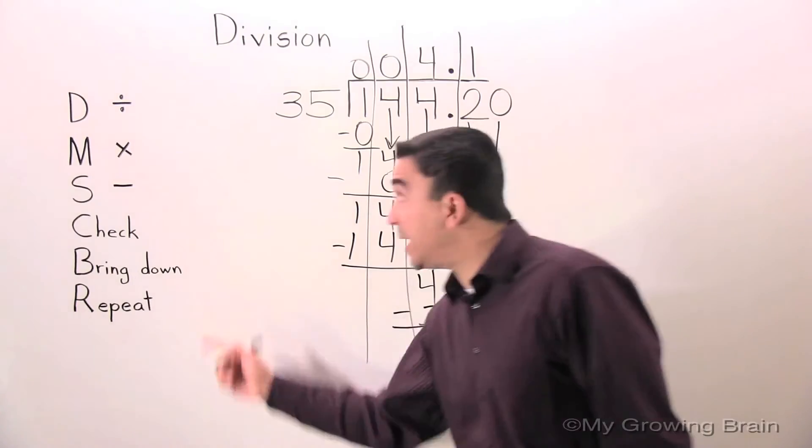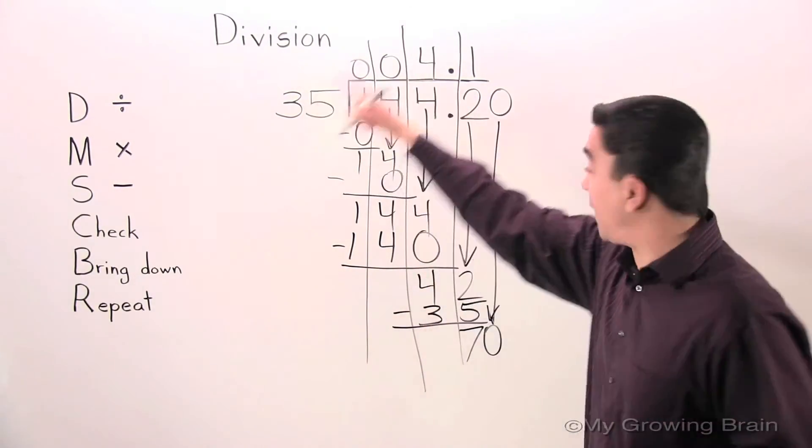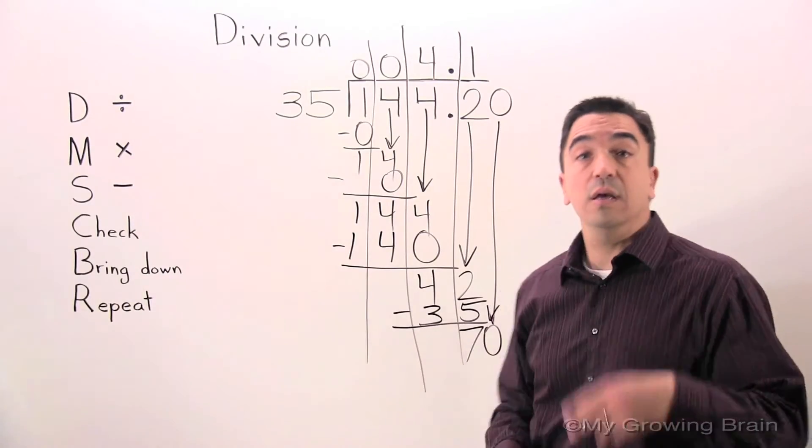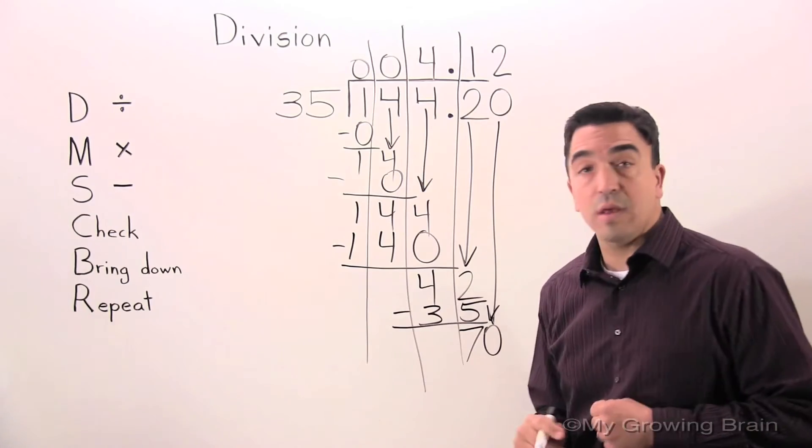That gives us 70. Next step: repeat. Repeat the whole process. 70 divided by 35, or 35 into 70. Twice.